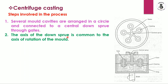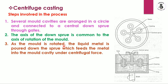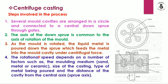The axis of the down sprue is common to all axes of rotation of the mold. As the mold is rotated, the liquid metal is poured down the sprue, which fills the mold cavity under centrifugal force. The rotational speed depends on a number of factors: the molding medium such as sand mold, metallic mold, or ceramic; the size of the castings; the type of metal being poured; and the distance of the cavity from the center sprue axis.